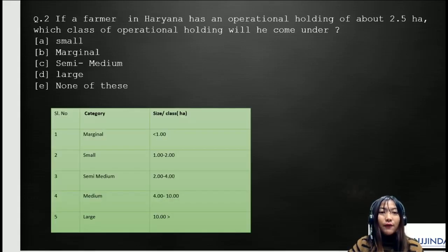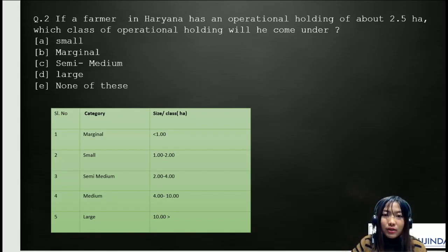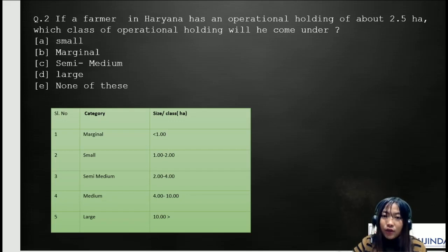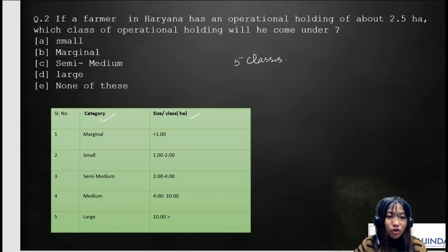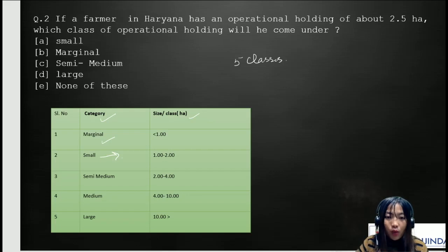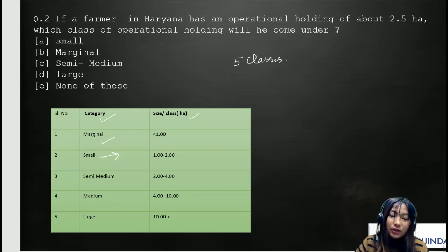Going to the second question: if a farmer in Haryana has an operational holding of about 2.5 hectares, which class of operational holdings will he come under? Operational holdings are divided into five classes: marginal is less than one hectare, small is one to two hectares, semi-medium is two to four hectares, medium is four to ten hectares, and large is more than ten hectares. From this table, it's very clear that the answer is semi-medium.